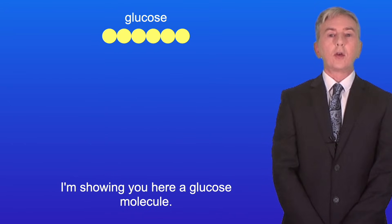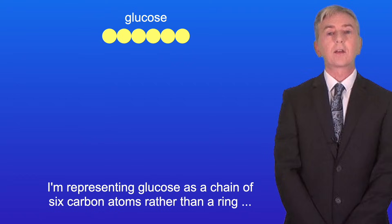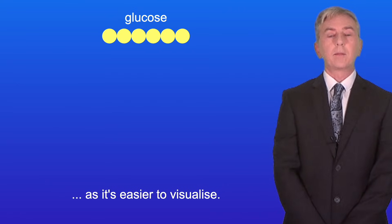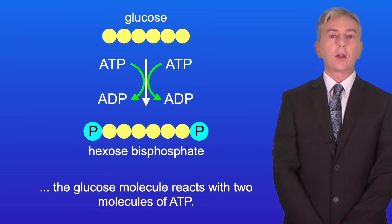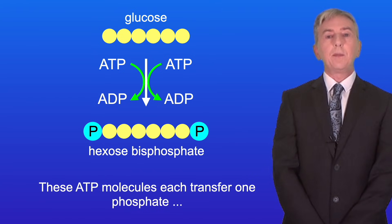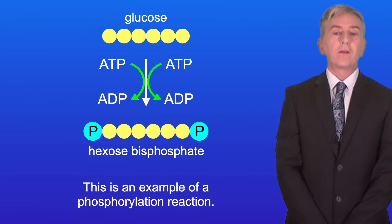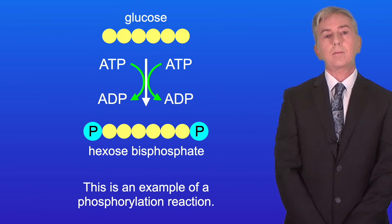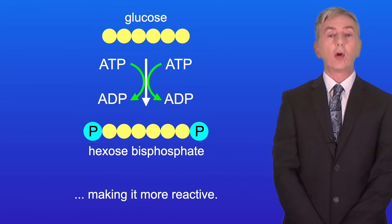Here is a glucose molecule, represented as a chain of six carbon atoms rather than a ring, as it's easier to visualize. In the first stage of glycolysis, the glucose molecule reacts with two molecules of ATP. These ATP molecules each transfer one phosphate onto the glucose molecule, so this is an example of a phosphorylation reaction. This reaction activates the glucose molecule, making it more reactive.